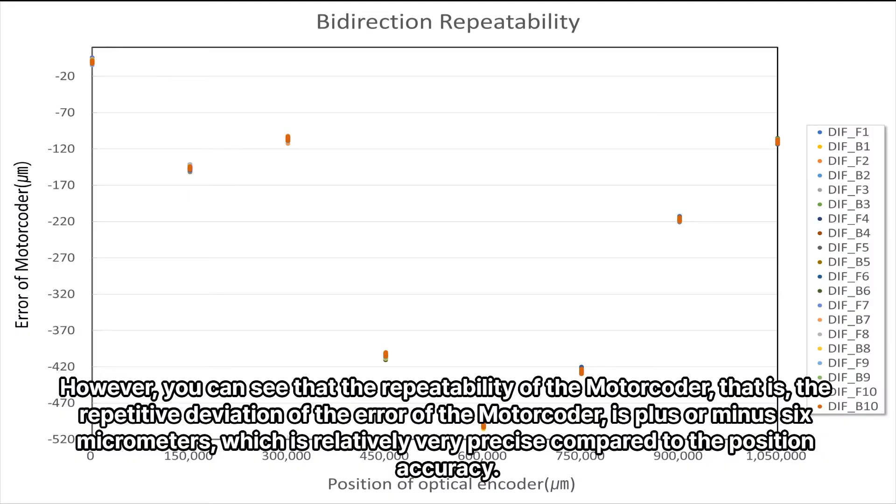However, you can see that the repeatability of the motor coder, that is, the repetitive deviation of the error of the motor coder, is plus or minus 6 micrometers, which is relatively very precise compared to the position accuracy.